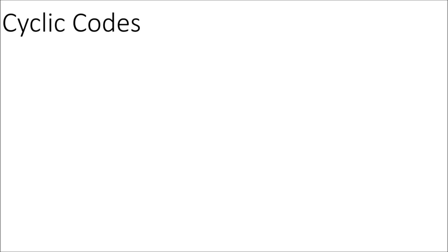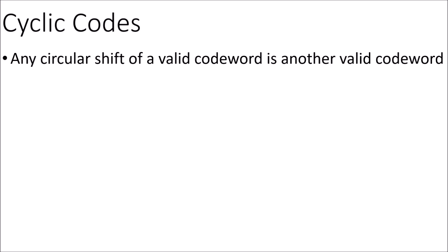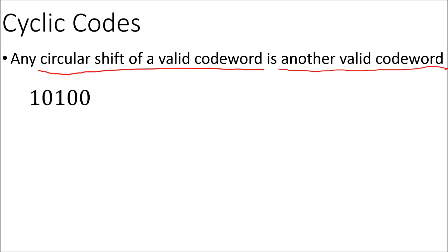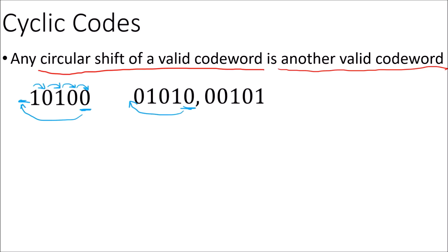First, I'll define a cyclic code. A cyclic code is a collection of valid codewords where any circular shift of the bits in a valid codeword results in another valid codeword. So if we wanted to do a cyclic shift of this codeword to the right, we'd move these four bits over to the right, and then move this last bit over to the beginning. And to do a circular shift of this codeword, we do the same thing — shift these four bits to the right and move the last one over to the beginning.